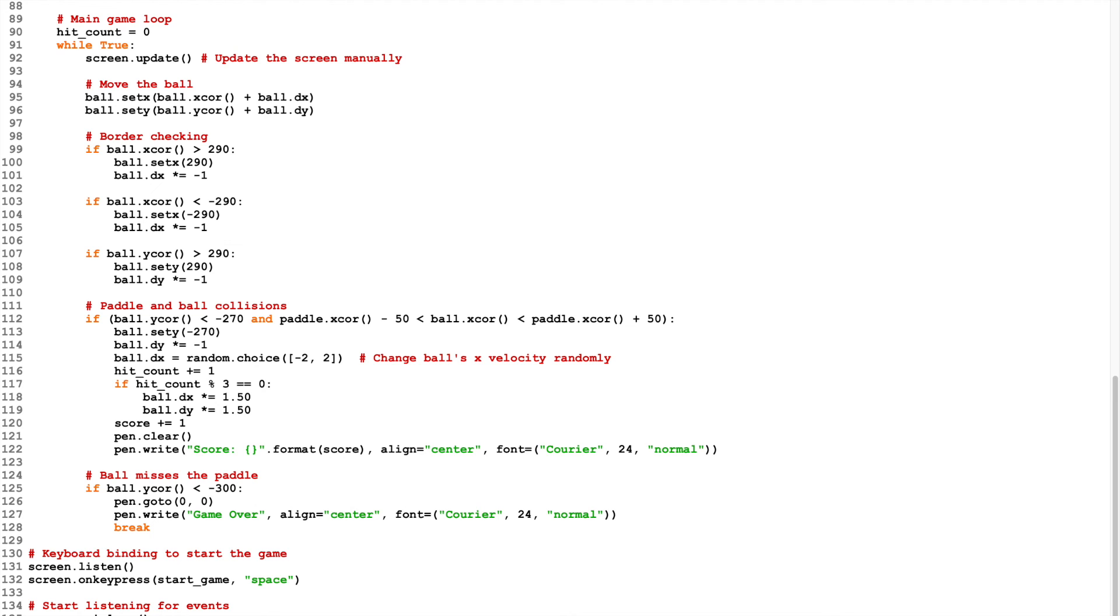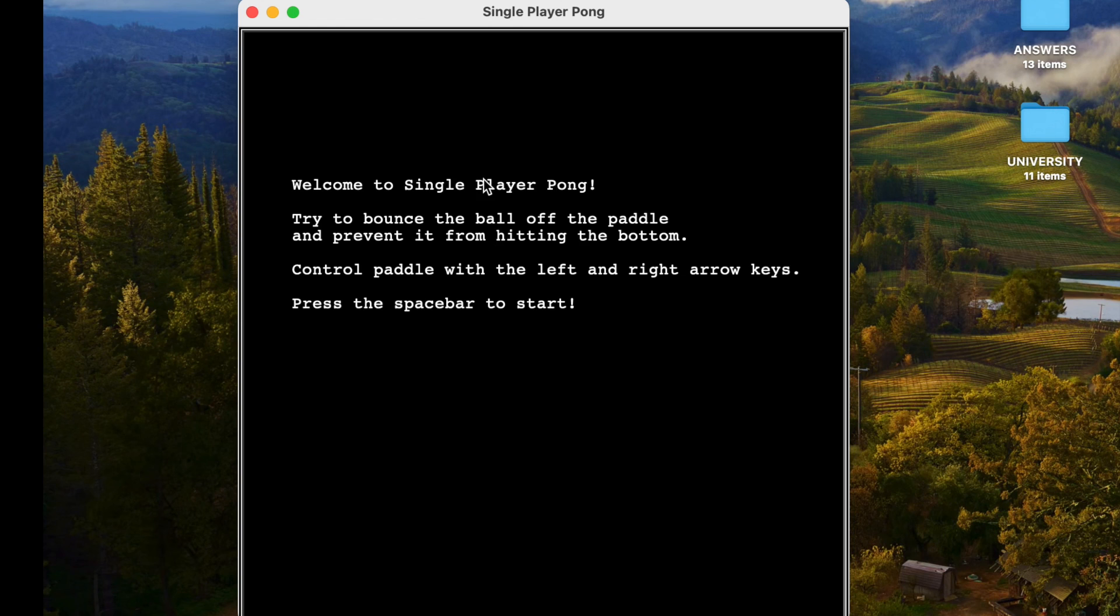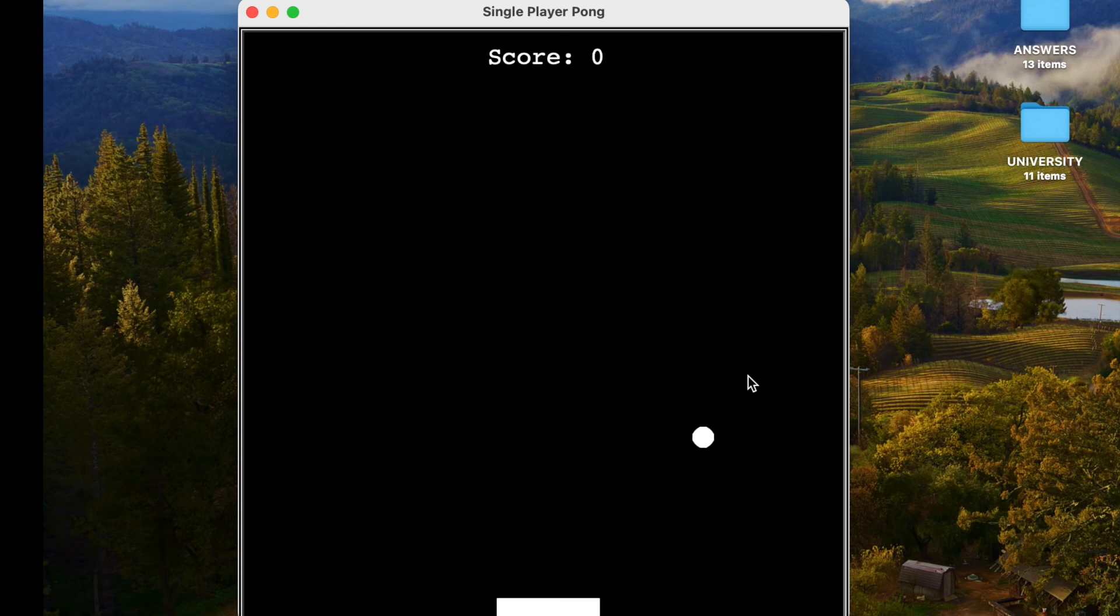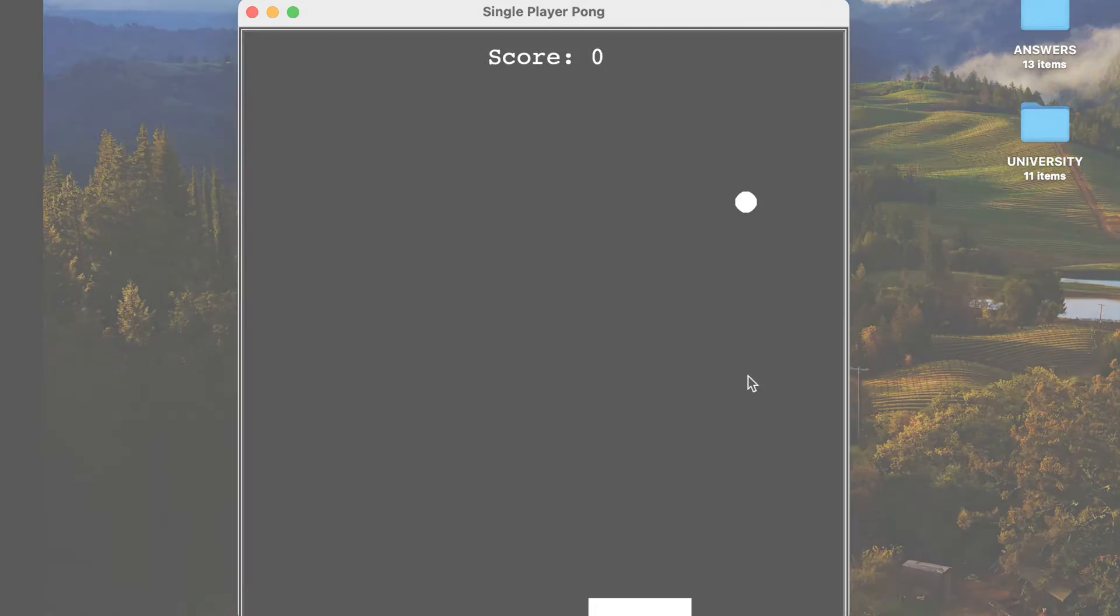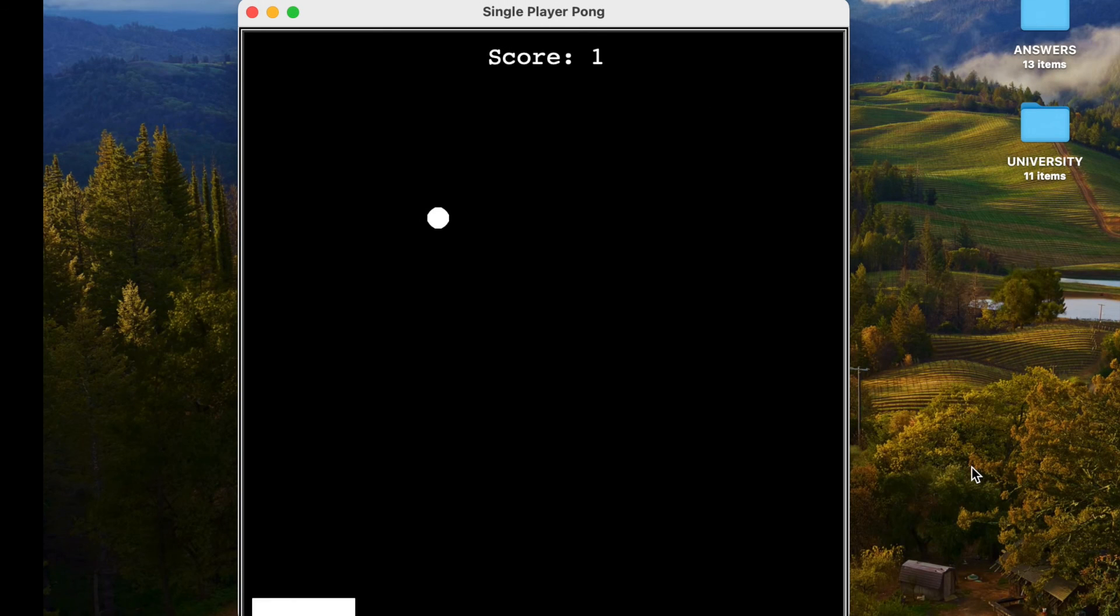I've now come down to line 135. If I run this - run module - the game loads. We press space bar to start. We use the left and right cursors. I'll speed this up a little bit. Left and right cursors to play the game. Keep batting the ball backwards and forwards.